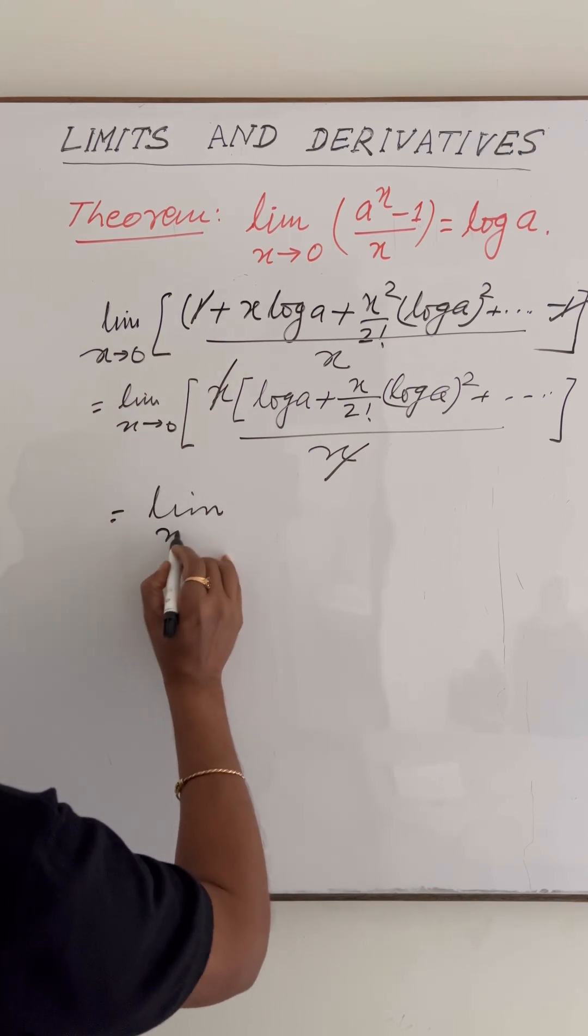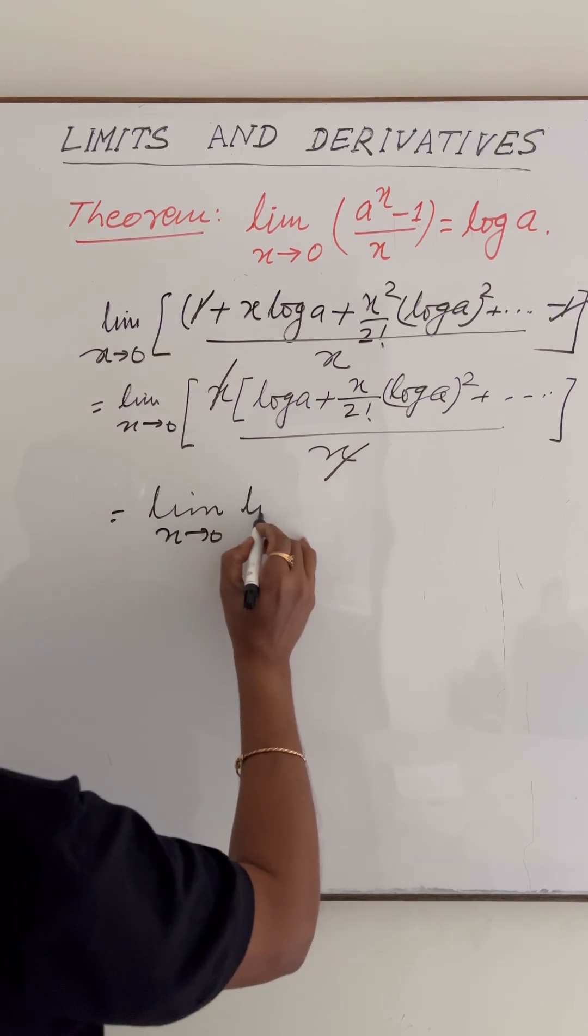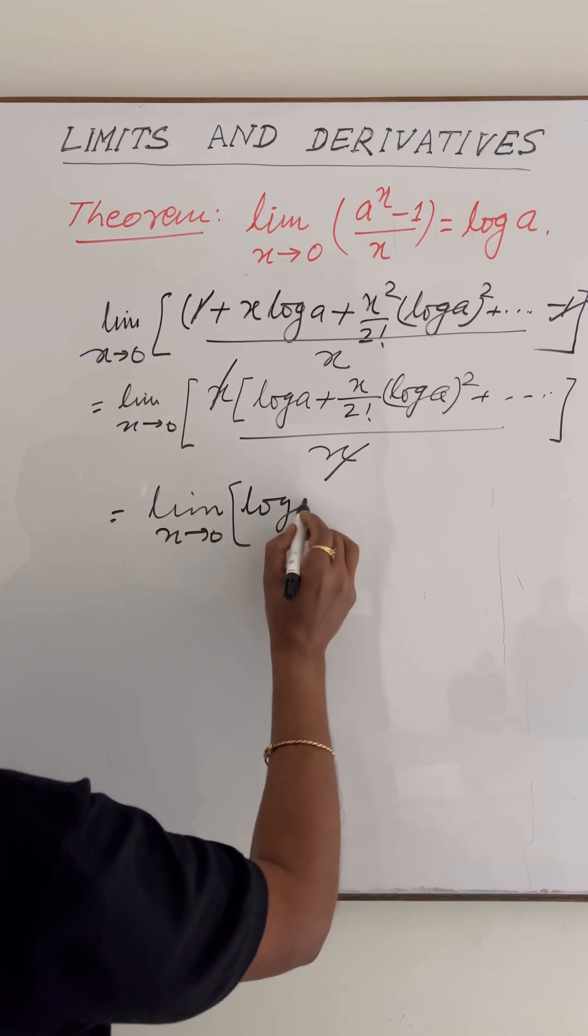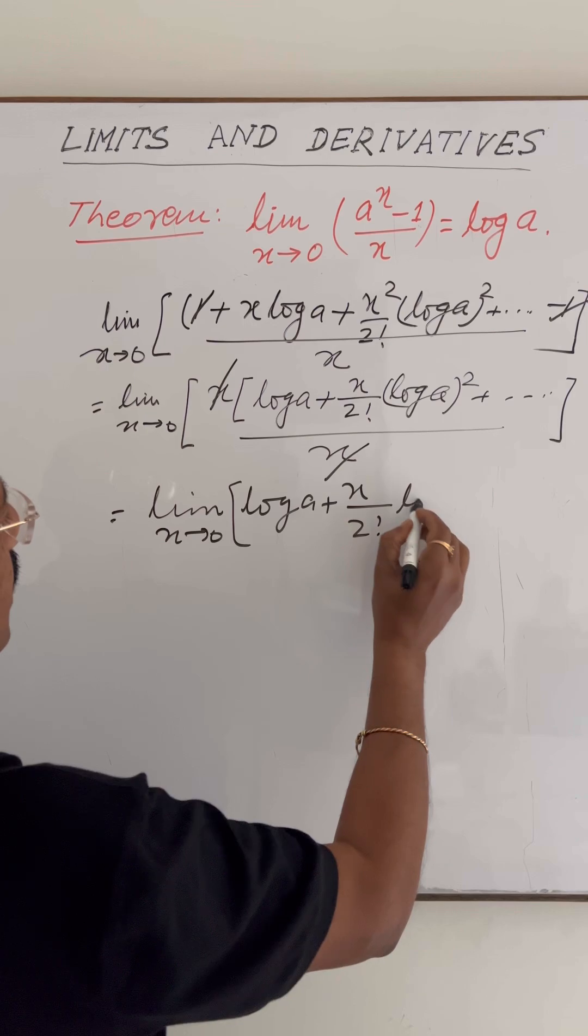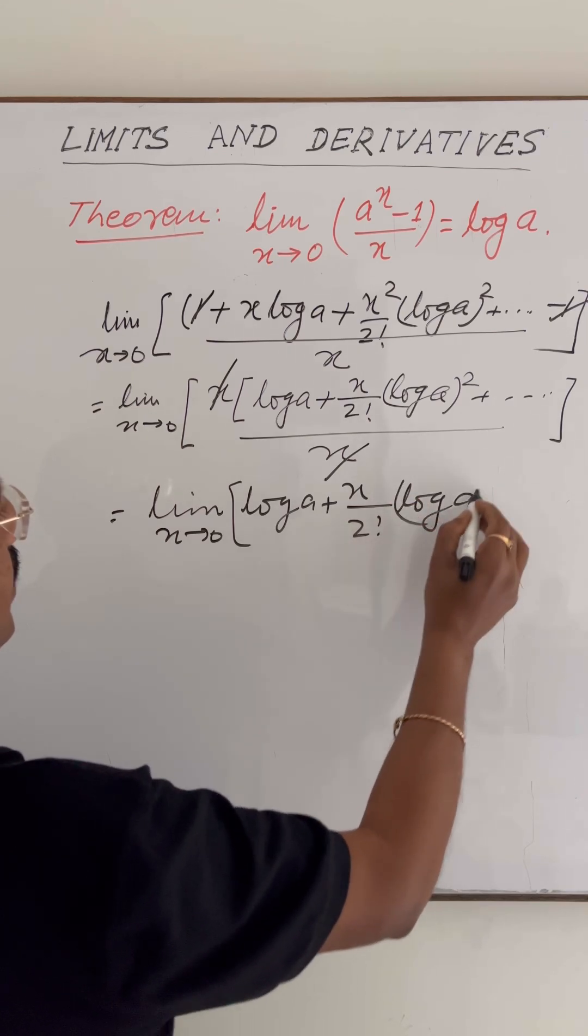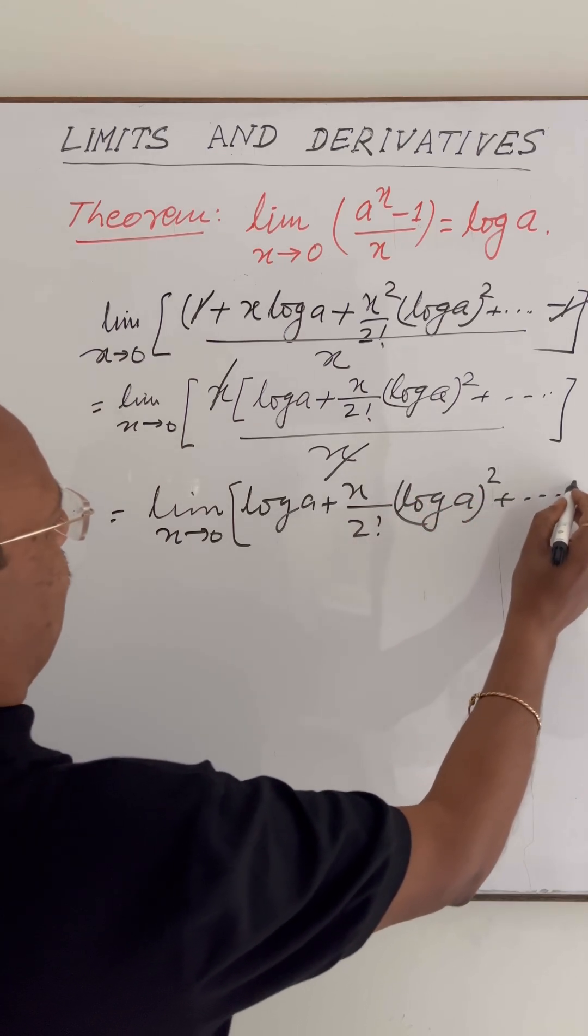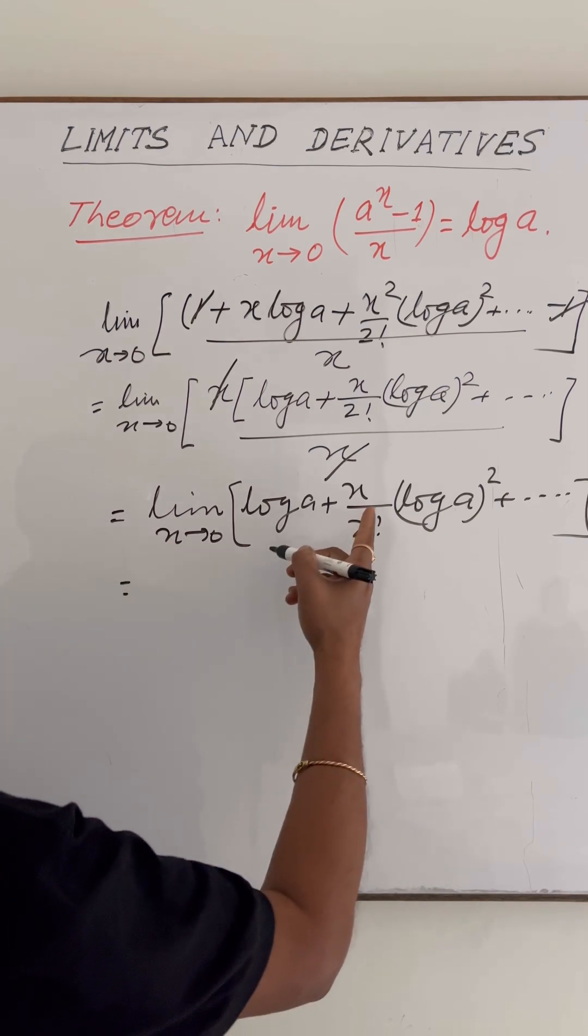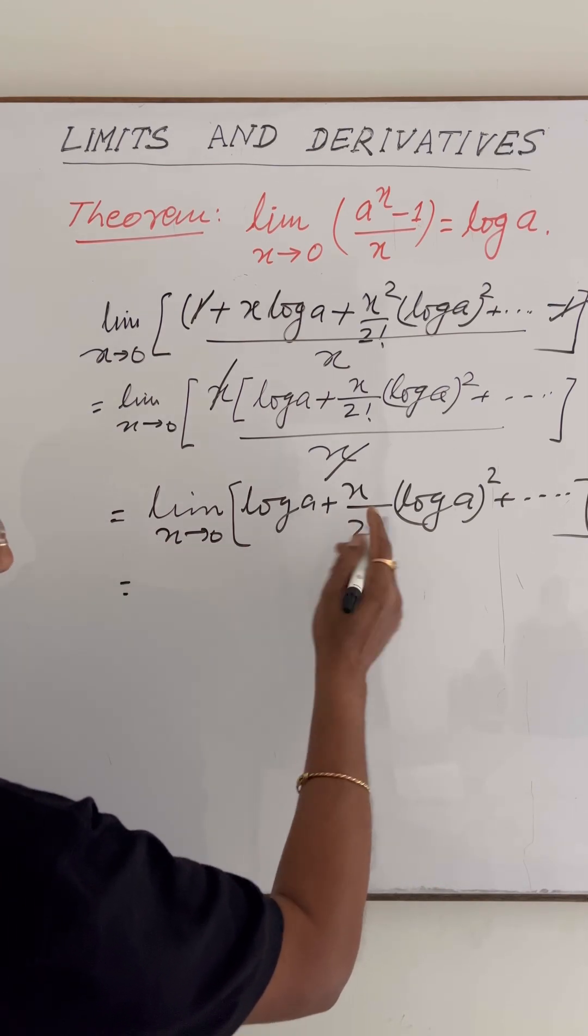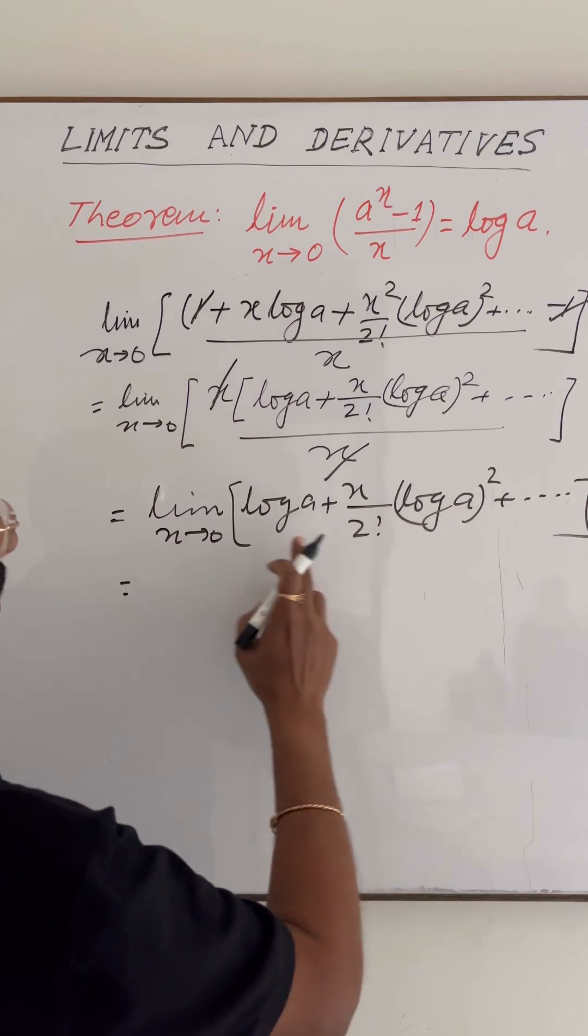This is equal to, putting x equals 0, these terms will become 0. Only log a will remain. So this is equal to log a plus 0 plus 0 and so on.